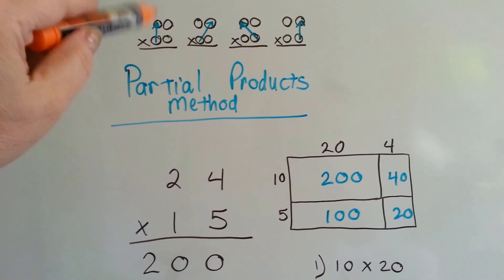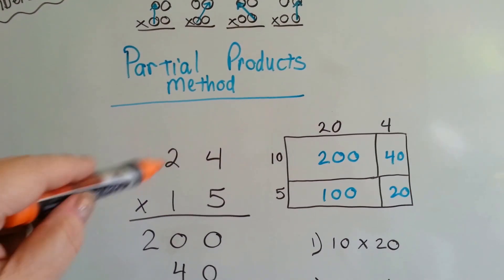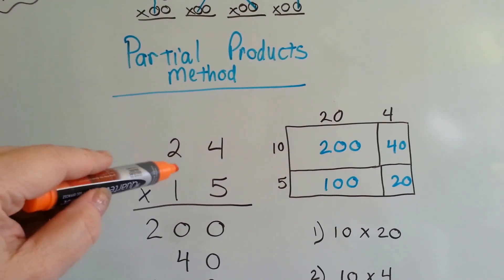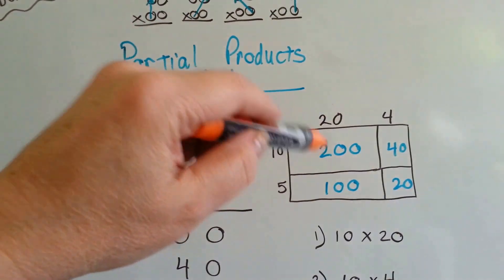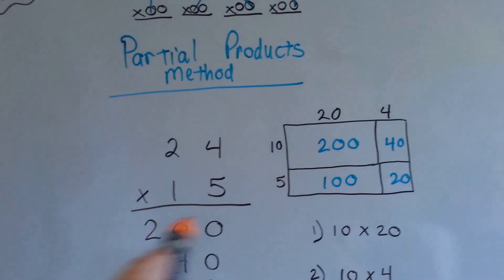So in partial products method, we're going to multiply the tens by the tens. So if we've got 24 times 15, we're going to multiply the 20 by the 10. The 20 by the 10, and we're going to get 200, and we just write the answer right here.